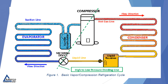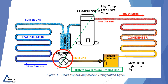So let's briefly review our refrigeration cycle. We begin at the compressor as a high-temperature, high-pressure vapor. As it goes through the condenser coil, the refrigerant condenses to a liquid and exits the condenser as a warm temperature, high-pressure liquid. At the metering device, the high pressure is reduced to low pressure and it enters the evaporator as cool temperature, low-pressure liquid. Exiting the evaporator, we have a cool temperature, low-pressure vapor that is then returned back to the compressor to begin the cycle all over again.